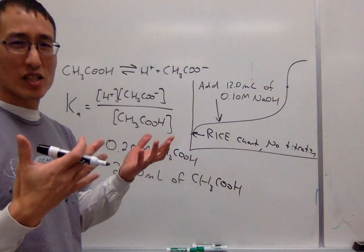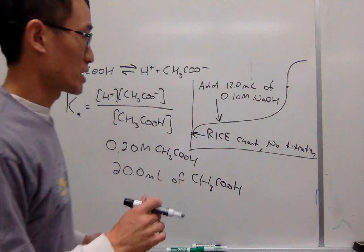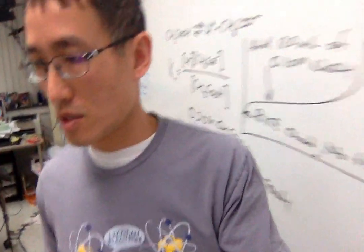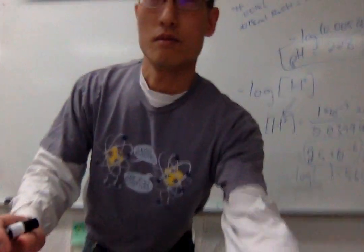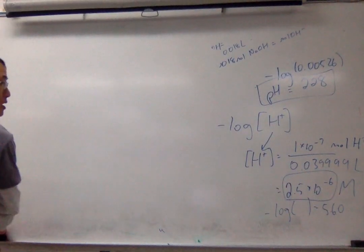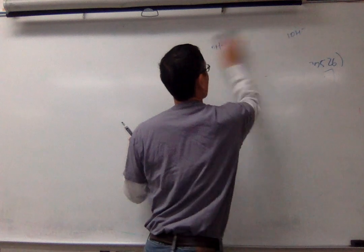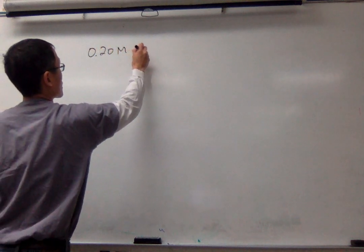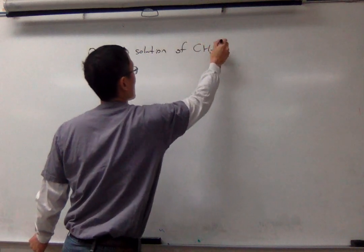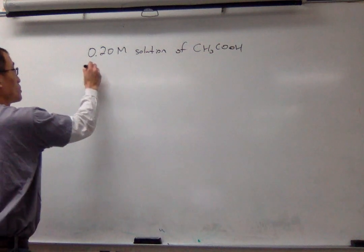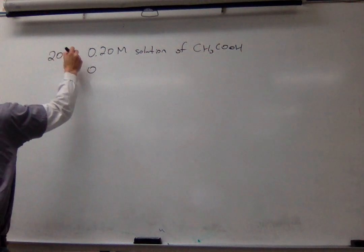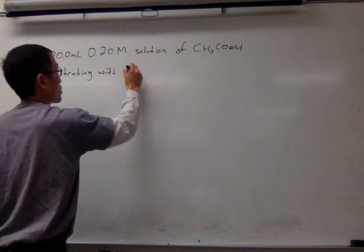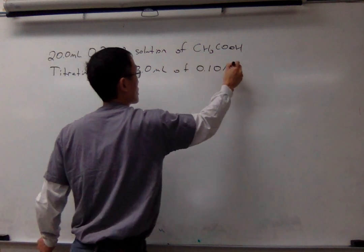So I'm going to add 12 milliliters of 0.10 molar NaOH. And I want to figure out what is the pH at this point now. So this is before the equivalence point, and we're titrating it, it's reacting somewhat, and we need to know how do I get the pH? So I'm going to move over here, take this, shift it over.